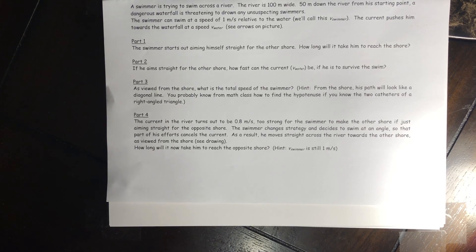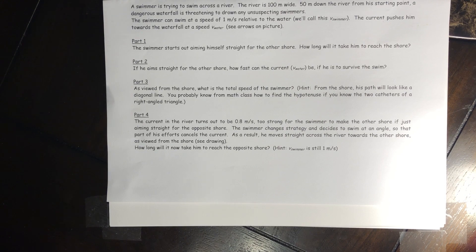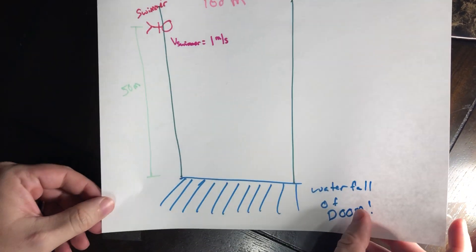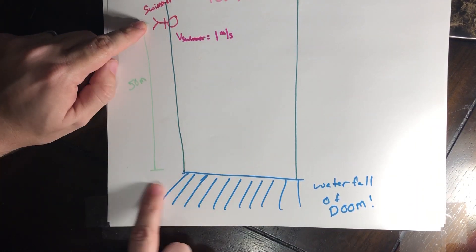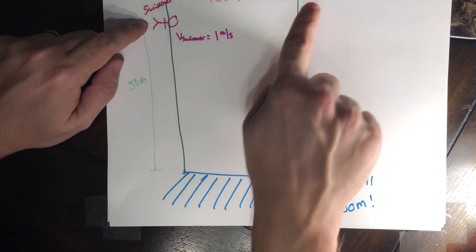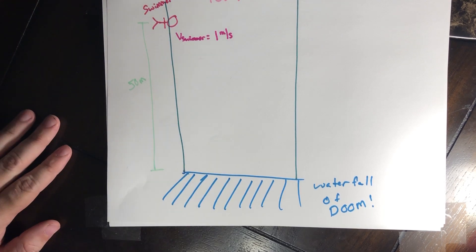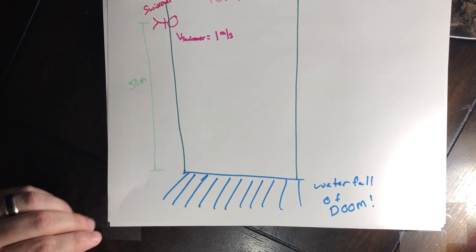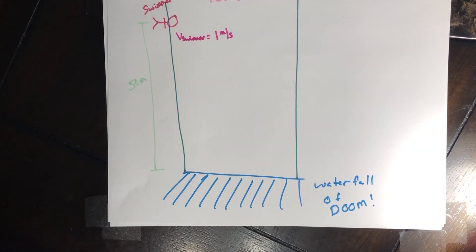Part one says the swimmer starts out aiming himself straight for the other shore. How long will it take him to reach that shore? Just like any other problem, this is a good one to draw a picture. I already created one to save us some time. We have our swimmer, 50 meters down is our waterfall — the waterfall of doom — and he has to go 100 meters across. So we want to know how long it's going to take.